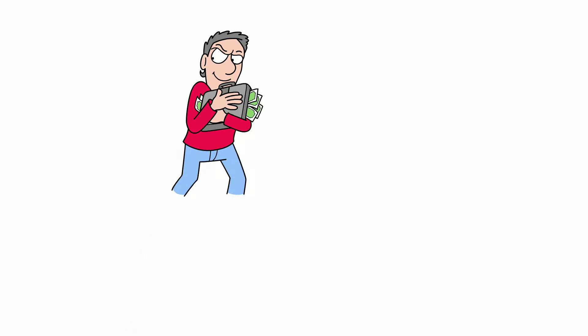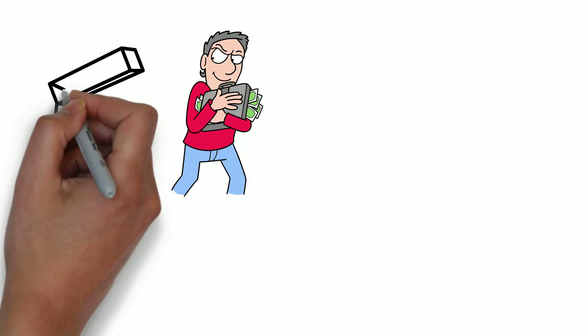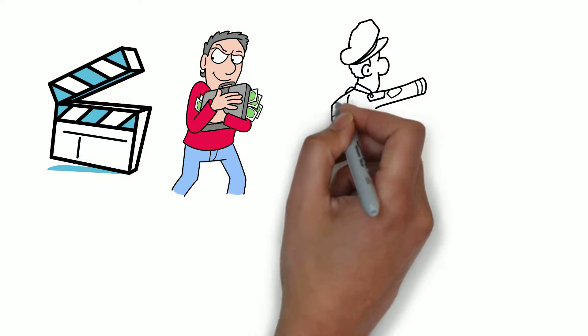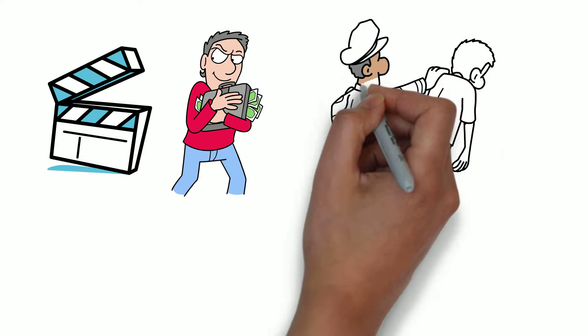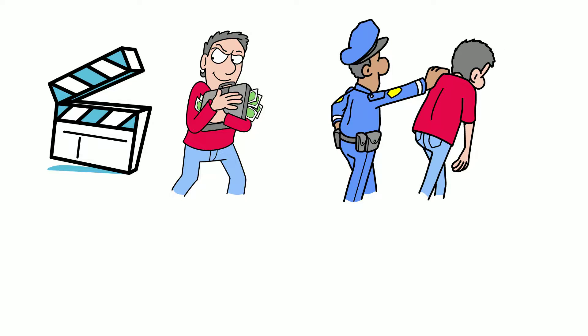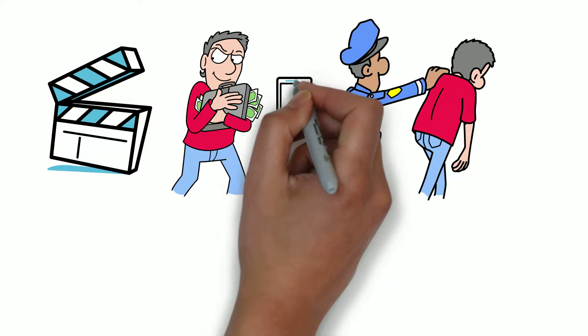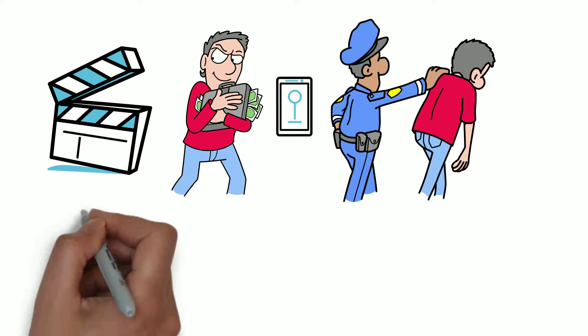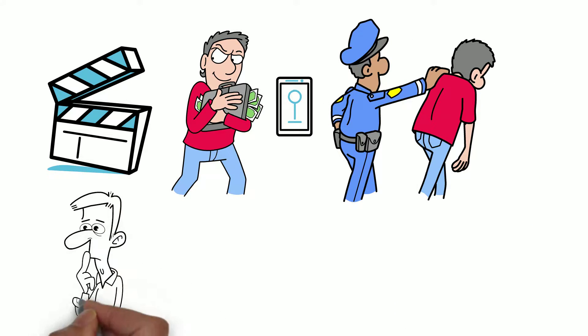If you ever watch crime films or series, you'll have seen parts where the police track down a suspect using the location of their phone. In this video, we're going to have a look at how that works.